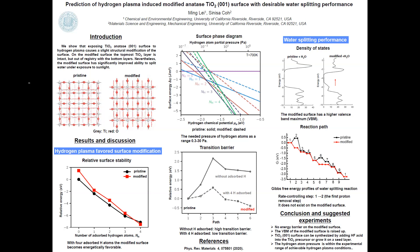In this work, we explore possible structure changes to the surface of TiO2 induced by absorption of hydrogen atoms onto the titanium dioxide. Under the hydrogen plasma condition, one of the possible surface modifications happens to the topmost titanium dioxide layer.